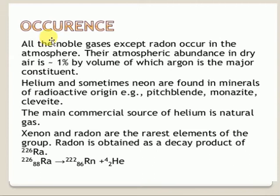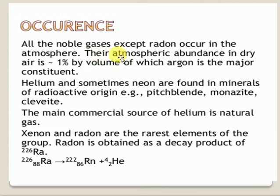Occurrence of noble gases: all noble gases except Radon occur in the atmosphere. The atmospheric abundance of noble gases in dry air is notable. Argon is present in the major amount among noble gases in the atmosphere.